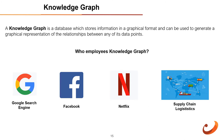Knowledge graph: Google's original PageRank algorithm is based on a form of a knowledge graph — a database which stores information in graphical format and can generate a graphical representation of relationships between data points. Facebook relies on this form of information organization to track networks of people and connections. Netflix uses knowledge graph technology to organize information on its vast content catalog, drawing connections between movies, TV shows, actors, directors, and producers. In supply chain logistics, knowledge graphs track inventories of different components, allowing manufacturers to understand crossover between materials used in different products.